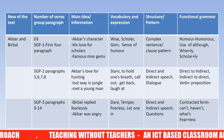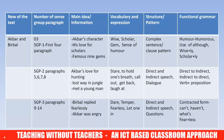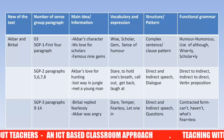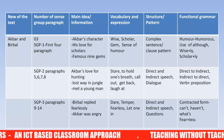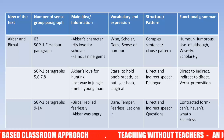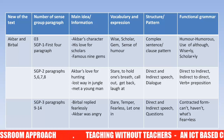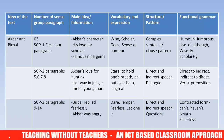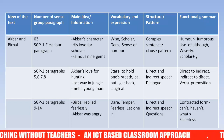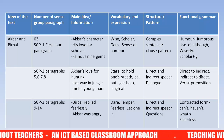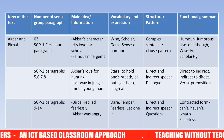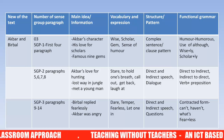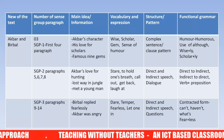In SGP two, the main ideas are Akbar's love for hunting, getting lost in the jungle, and meeting a young man. The vocabulary and expressions are: stare, to hold one's breath, call out, get back, and laugh at. The structure and patterns include direct and indirect speech and dialogue. The grammar focus is conversion of direct to indirect and indirect to direct speech, as well as verb plus preposition.